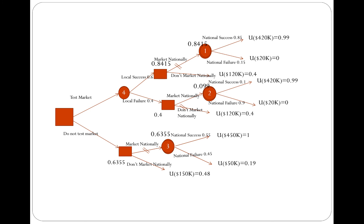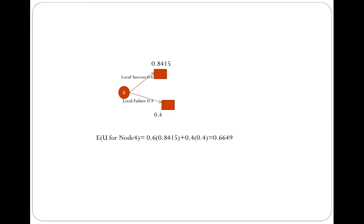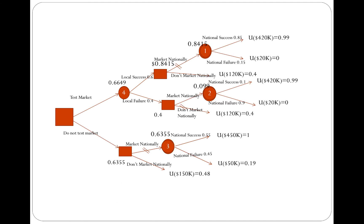Now I have to make a decision between two nodes to come back to the root of the tree. This is an event node, so I calculate the expected utility for node 4, which equals the product of the first value and its probability plus the second value and its probability, giving 0.6649. Between testing the market at 0.6649 and not testing, testing the market has the highest utility. So with a risk-averse utility function, I end up choosing to test the market, as opposed to the risk-neutral scenario where we picked not testing.